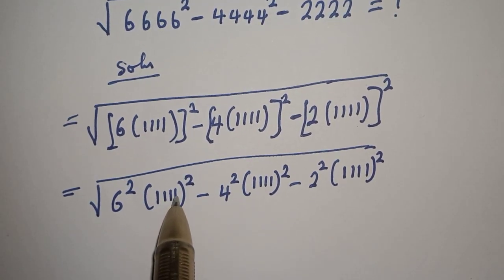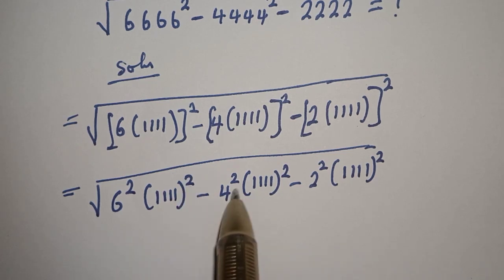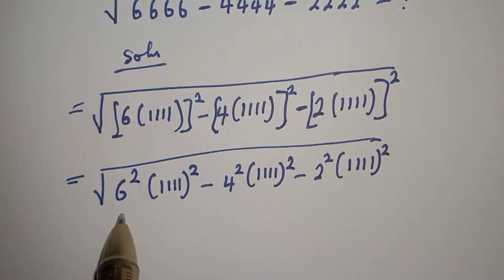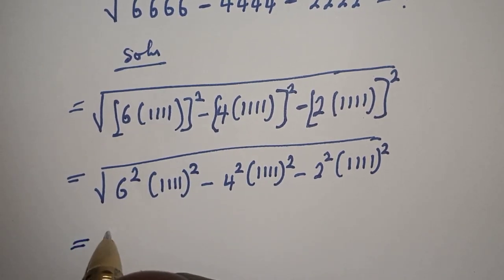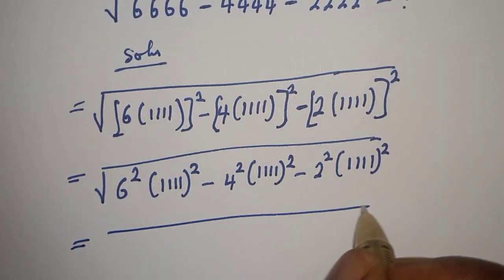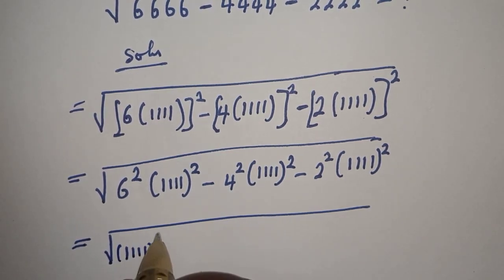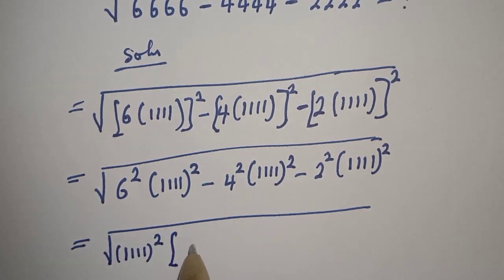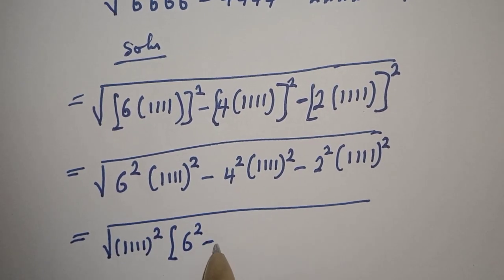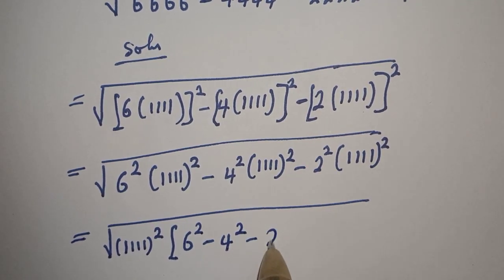Now 1111 squared is common. Let's bring it out. This is equal to square root of 1111 squared bracket, 6 squared minus 4 squared minus 2 squared.